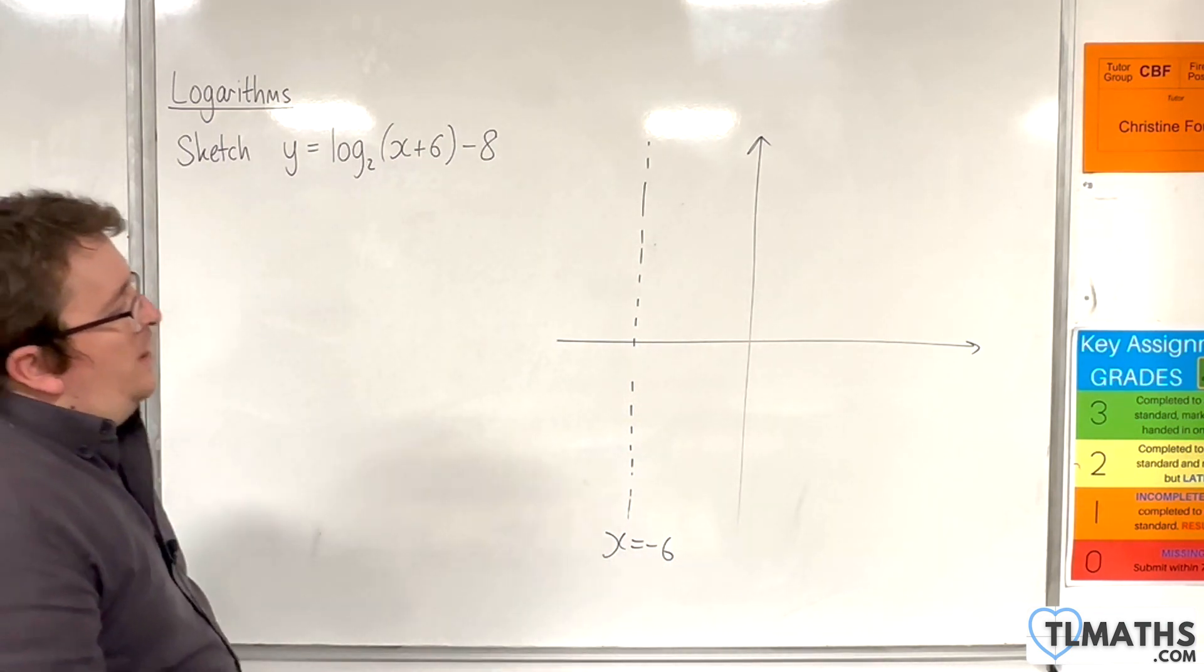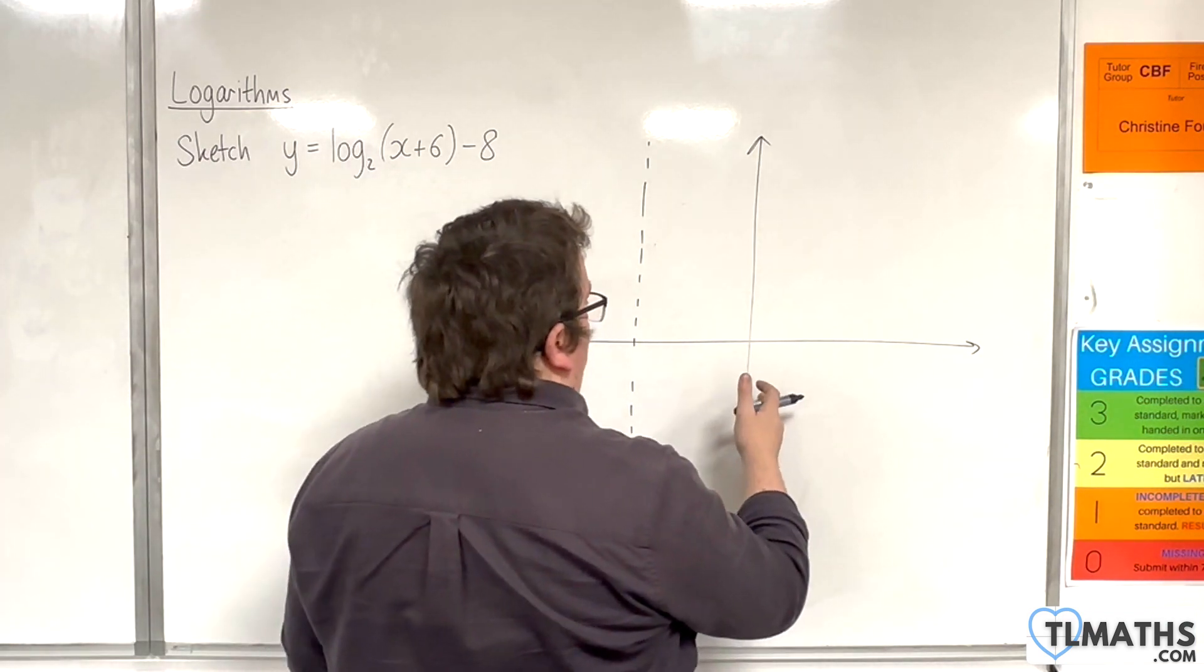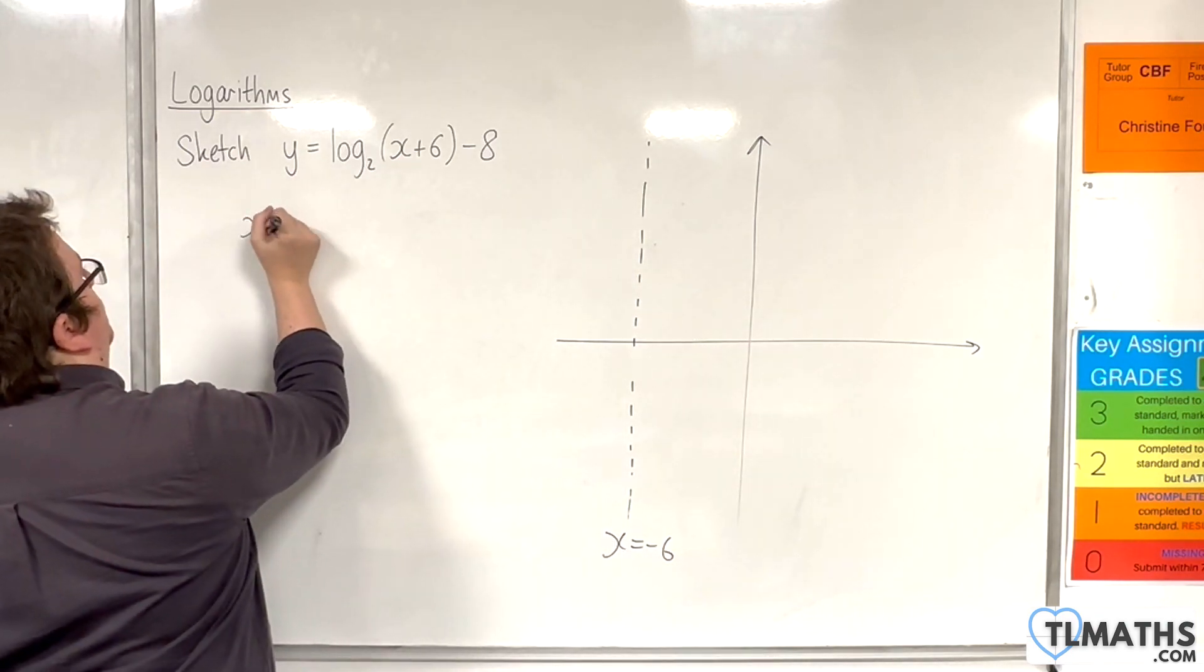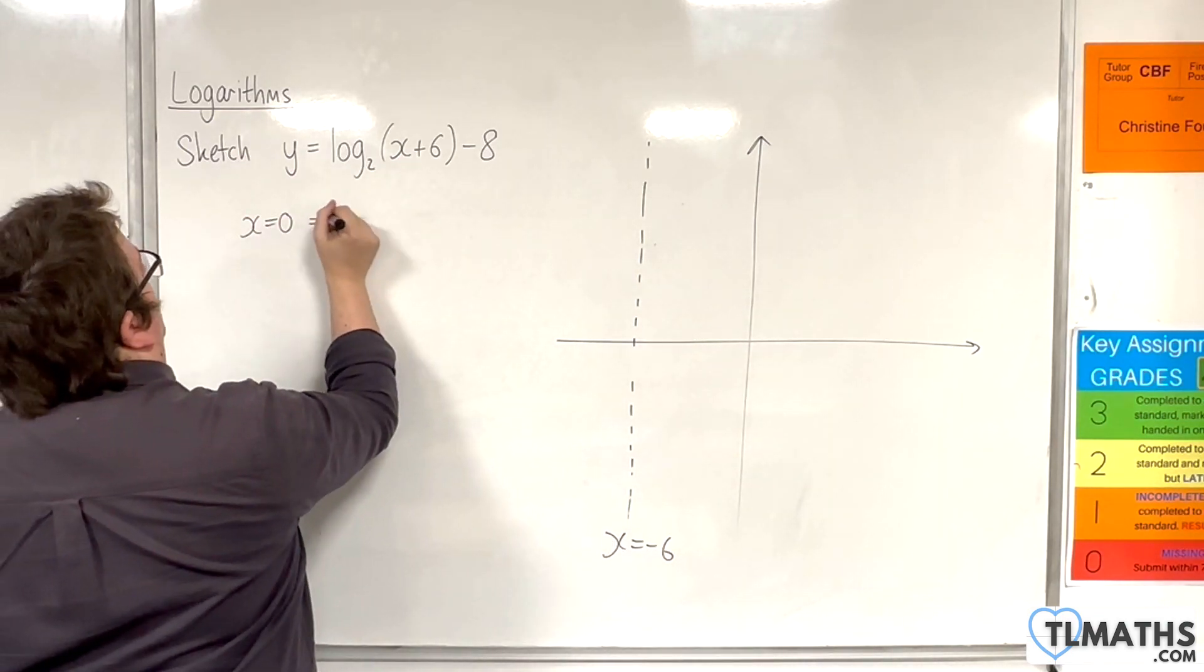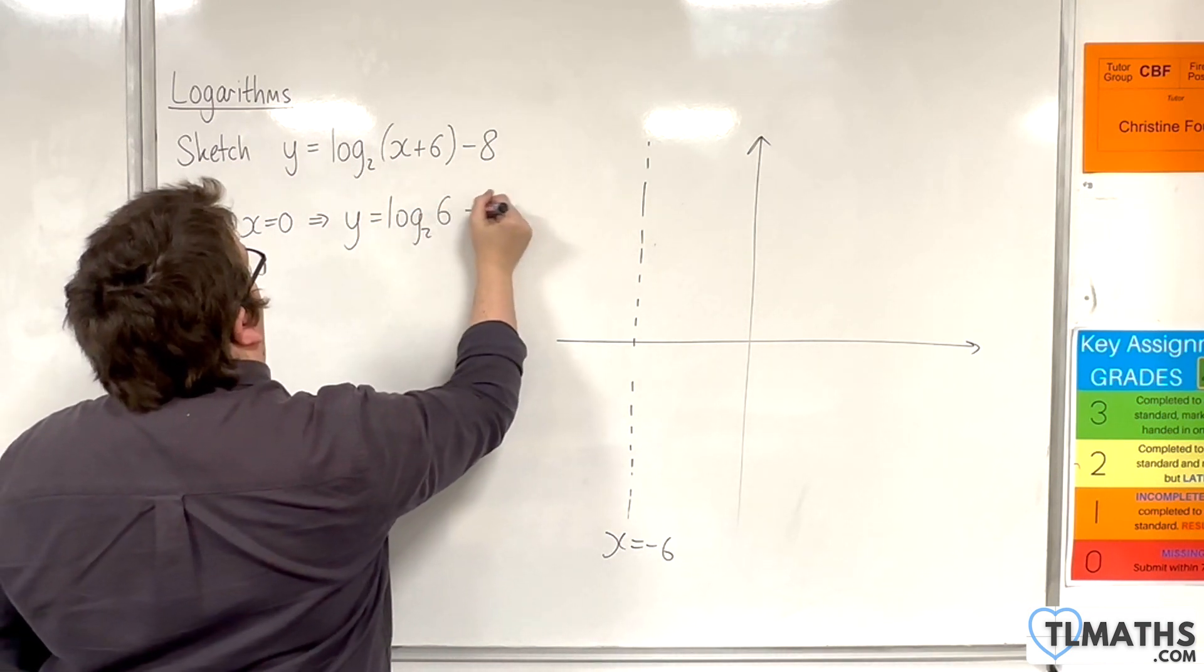Now let's check where it crosses the y-axis, because we've got to be a little bit careful as to whether it crosses here or here. So that's when x is 0. So y would be equal to log base 2 of 6, take away 8.